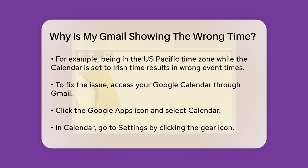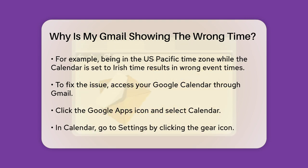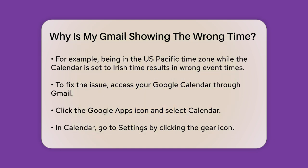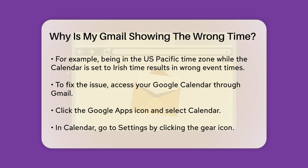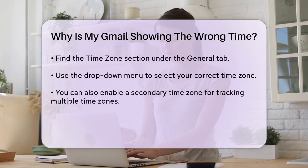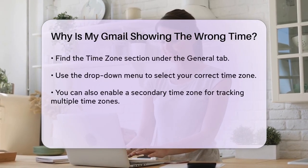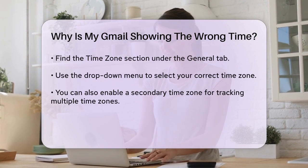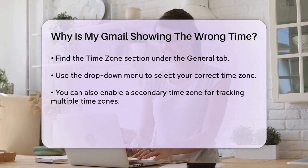To fix this, you need to adjust the time zone in your Google Calendar. Here's how you do it: open your Gmail account on a web browser, click on the Google Apps icon in the upper right corner and select Calendar. In the calendar, click on the gear icon in the top right corner and select Settings. On the Settings page, go to the General tab and find the Time Zone section. Use the drop-down menu to select your correct time zone. You can also set a secondary time zone if you need to keep track of multiple time zones — just make sure the Display Secondary Time Zone checkbox is enabled.